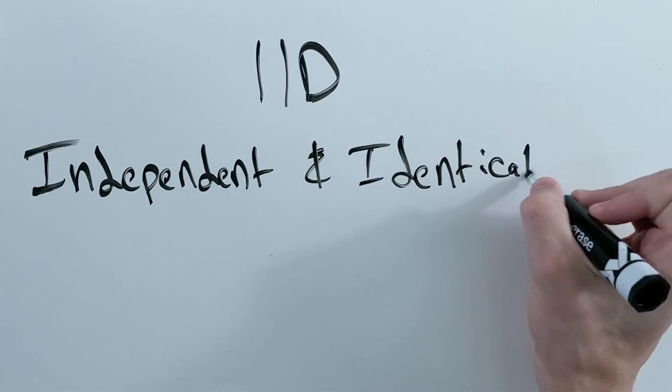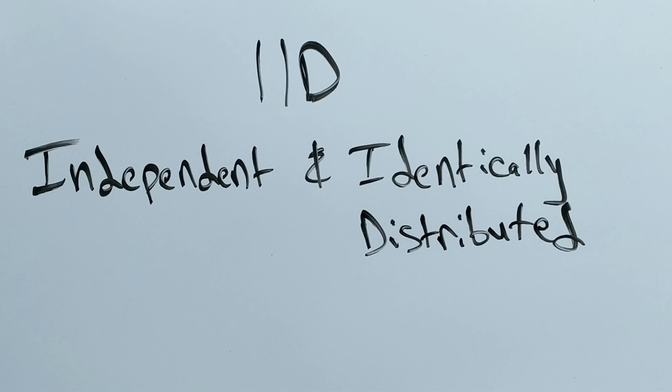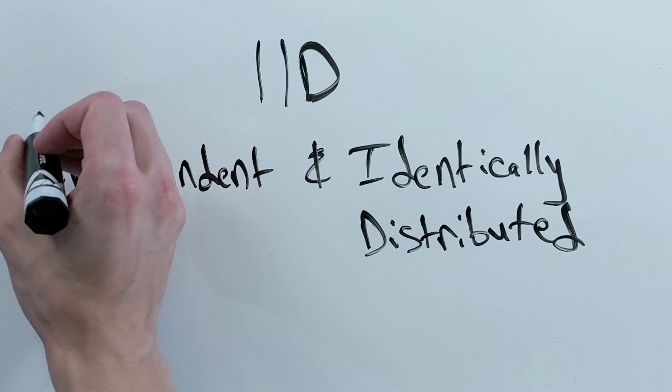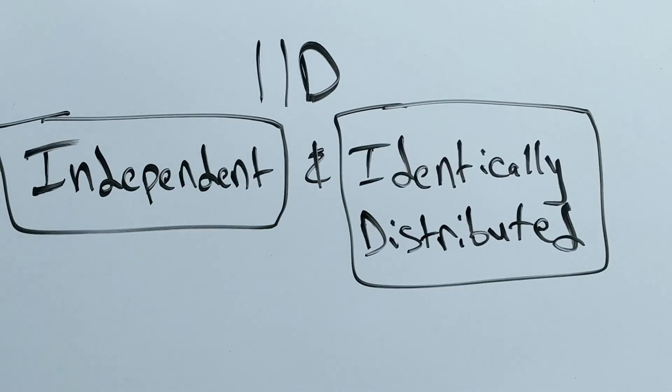IID stands for independent and identically distributed. This can be broken down into two parts: independence and identical distribution.